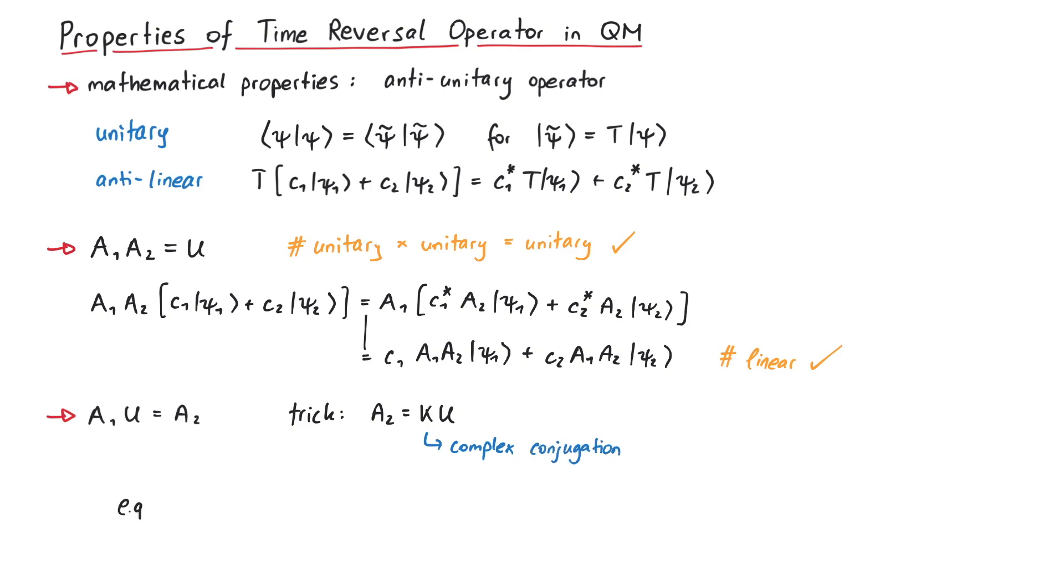For instance, you can write the time reversal operator as K times U, where K is complex conjugation, and then you just have to find out which unitary operator U is the right one for your system such that you get the correct time reversal operator.